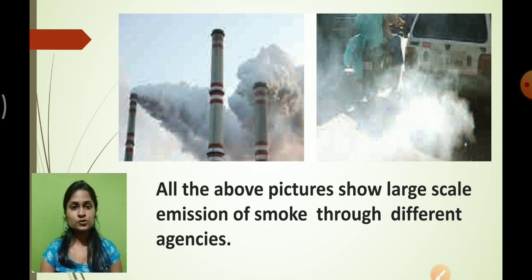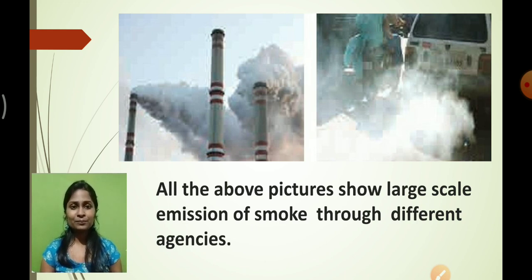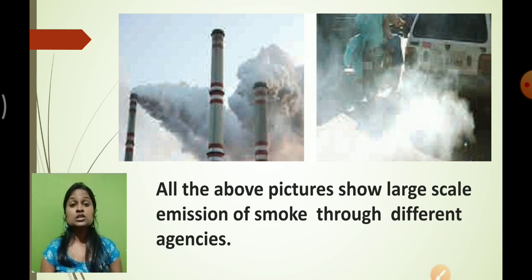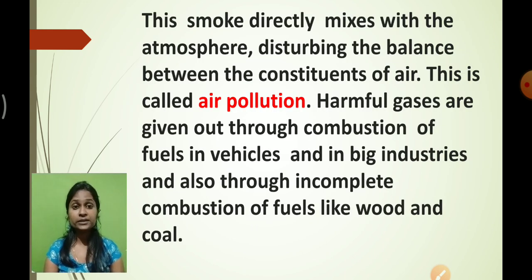The stratosphere is getting damaged day by day because of emissions coming from different agencies. As you can see in the picture, large-scale smoke is coming from factories, vehicles, burning of coal, and burning of fossils. When we burn anything, a lot of fumes come out. That smoke goes and mixes into the air, contaminating it. We cannot breathe properly in contaminated air as it causes damage to our lungs. This condition of the air we call air pollution.